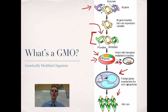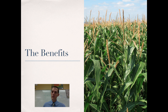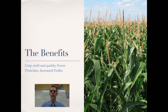So that's basically what a genetically modified organism is — it's an organism that has had a gene from another different type of organism inserted into it for some purpose. As with any scientific endeavor, there are benefits and there are drawbacks. So we're going to talk about the benefits first and then the drawbacks.